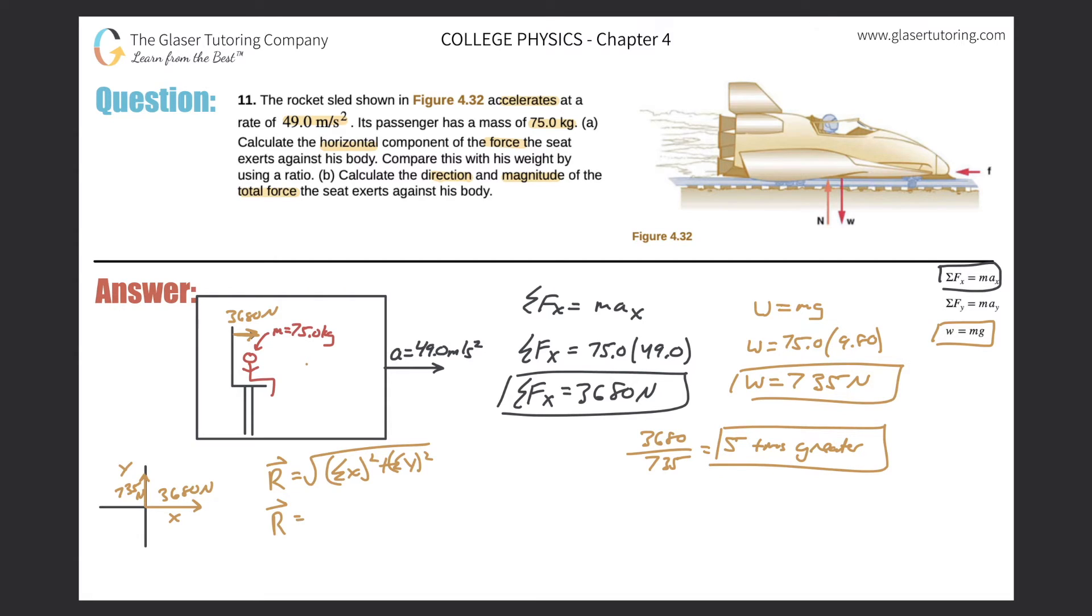So the resultant vector here should be the square root of 3680 squared plus 735 squared. So the resultant vector here, which by the way, is the total force, so I'll write f sub t for total force, square root of 3680 squared plus 735 squared. And it comes out to be 3750. And that'll be in terms of newtons.